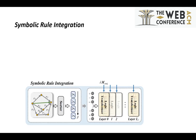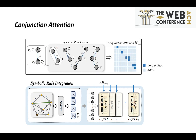To address the above issues, we propose a symbolic rule integration model with logic transformer for inductive relation prediction, named SimRita. The logic transformer module is proposed to obtain embeddings of symbolic rules during reasoning. Its inputs are relation embeddings, which aims at the argument variability. For predicate non-commutativity, a conjunction attention providing undamaged symbolic information is designed for the logic transformer.